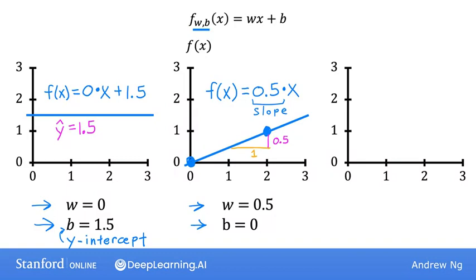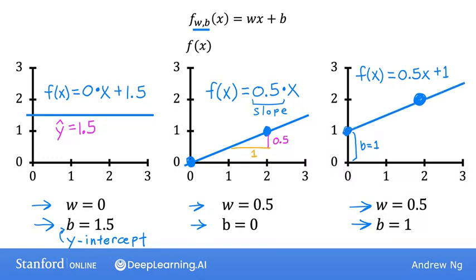And finally, if w equals 0.5 and b equals 1, then f of x is 0.5 times x plus 1. And when x is 0, then f of x equals b, which is 1. So the line intersects the vertical axis at b, the y-intercept. Also, when x is 2, then f of x is 2. So the line looks like this. Again, the slope is 0.5 divided by 1. So the value of w gives you the slope, which is 0.5.